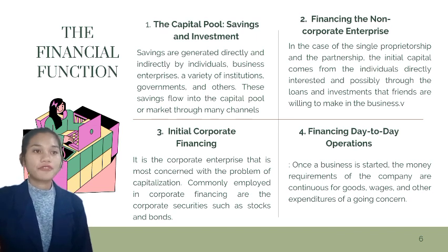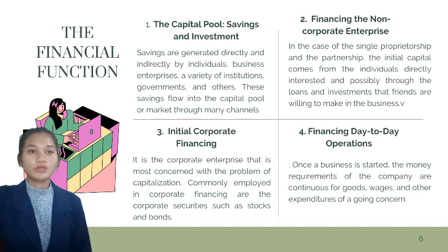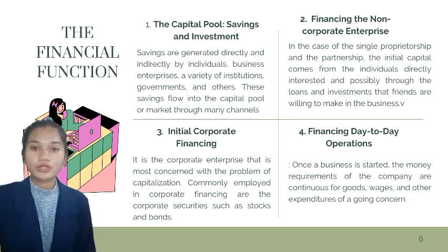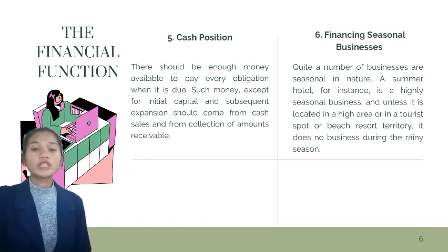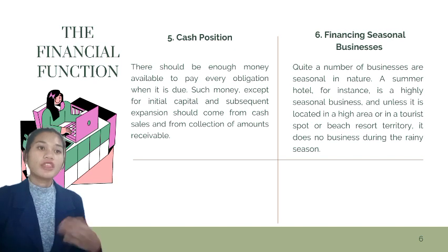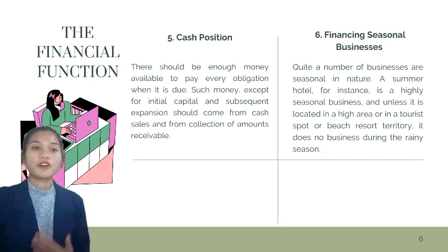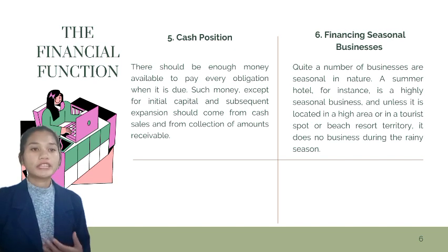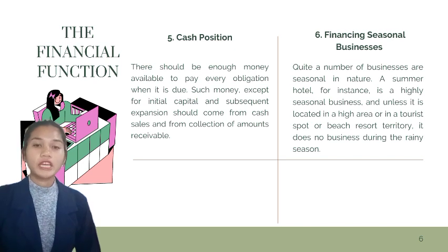The fourth is financing day-to-day operations. Once a business is started, the company's cash requirements continue for goods, wages, and other expenditures. The keeping and checking of accounts is done by the accounting department. The treasurer is constantly on the watch to see that the company's finances are conserved. The fifth is the cash position — the amount of money on hand or in sight in relation to its accounts payable and notes due. Careful managers check it frequently, in many cases every day. A treasurer who can keep his cash position good tends to be a good money manager.